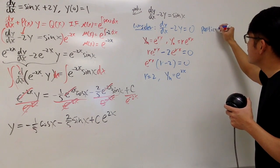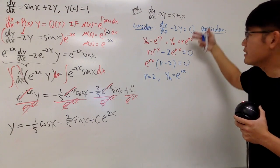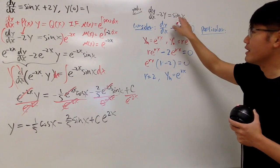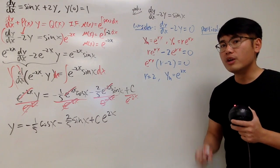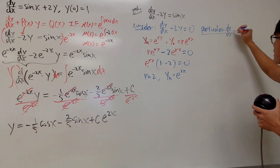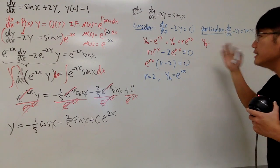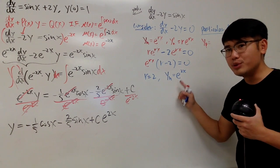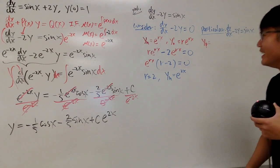Now we also have to consider the particular solution. The homogeneous solution has no way to produce the sin x on the right-hand side, so we have to face that. We need dy/dx minus 2y to equal sin x — this is the method of undetermined coefficients to find the particular solution y_p. The homogeneous solution e to the 2x and sin x are linearly independent — they have nothing to do with each other.